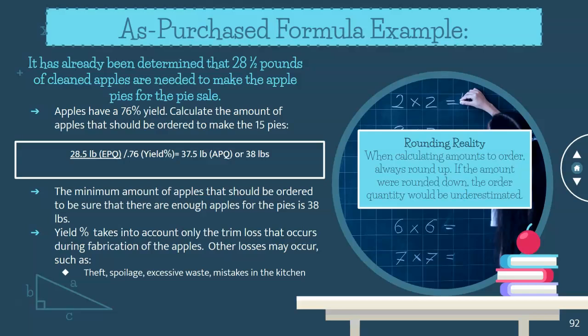When you do that calculation — EPQ divided by the yield percent — you get 37.5 pounds, which is your APQ. We would round that up to 38 pounds. You'll have a little more than 37.5 pounds because you round up to 38, but you don't want too much because of theft, spoilage, and excessive waste. It's always good to have just a little extra even when taking yield percent into consideration, but not a lot.